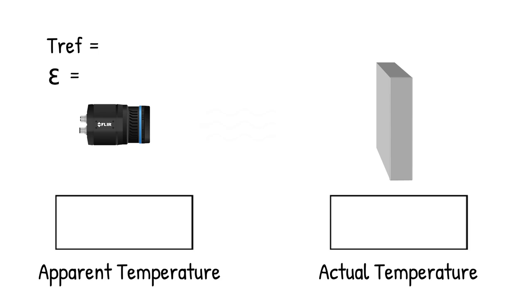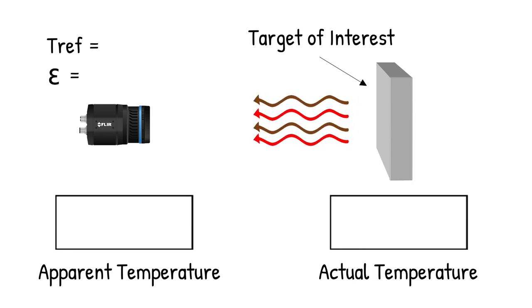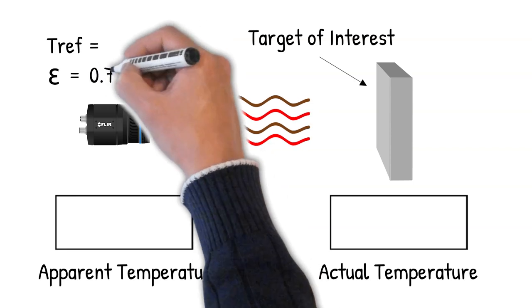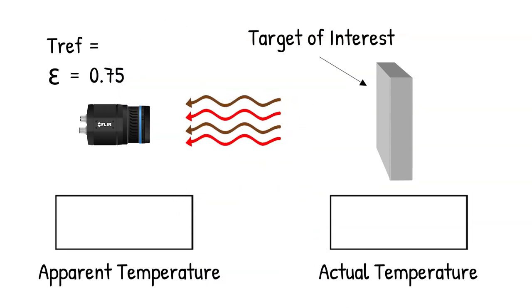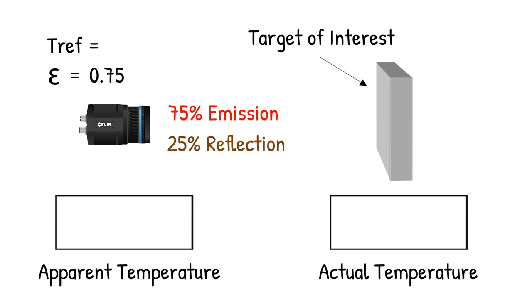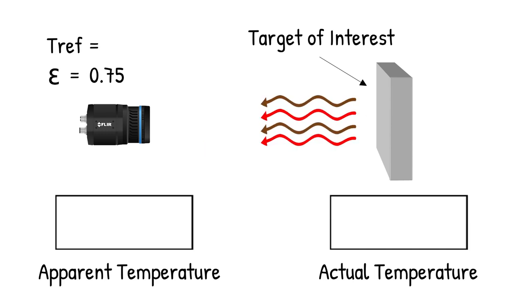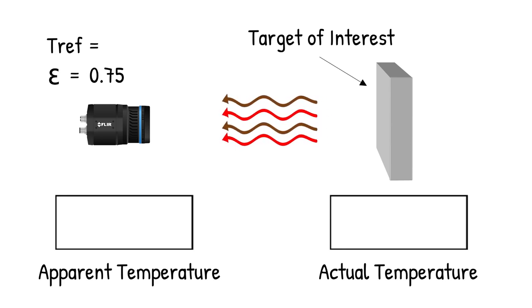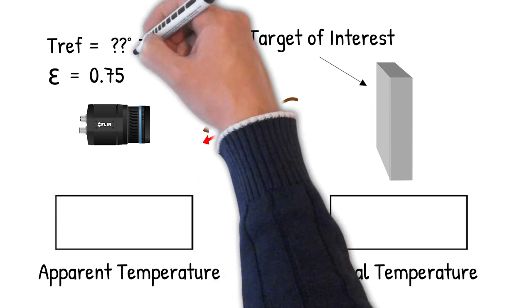In this example, the target of interest is opaque, meaning there is no radiation transmission through the target, and the target has an emissivity value of .75, or in other words, the total radiation from the target will be 75% emission and 25% reflection. If no emissivity adjustment is made to the infrared camera, how will the reflected radiation impact the camera measurement?